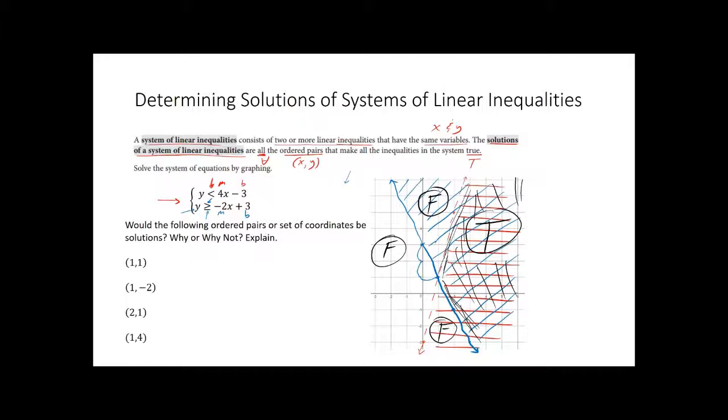So let's take a look. Would the following ordered pairs or set of coordinates be solutions? Why or why not? Let's check 1, 1. Let's see. Where's 1, 1? 1, 1 is like right here. But if you notice, we got a dotted boundary line right there. So technically, it doesn't land on y being less than 4x minus 3 because they're not both solid. Only one of them is a solid boundary line. So it doesn't work for the red guy. So that's false. So no, not a solution because it's false.